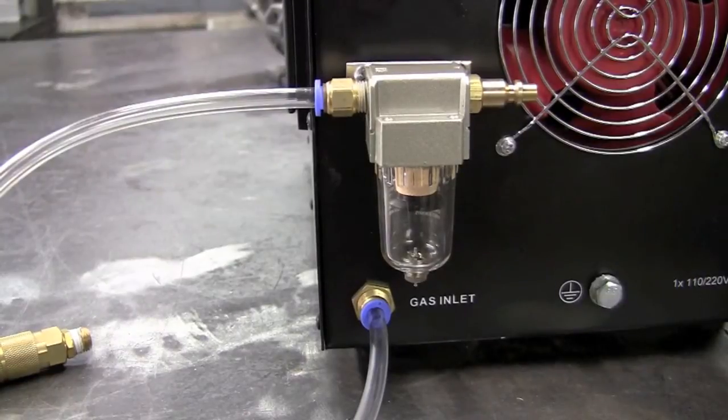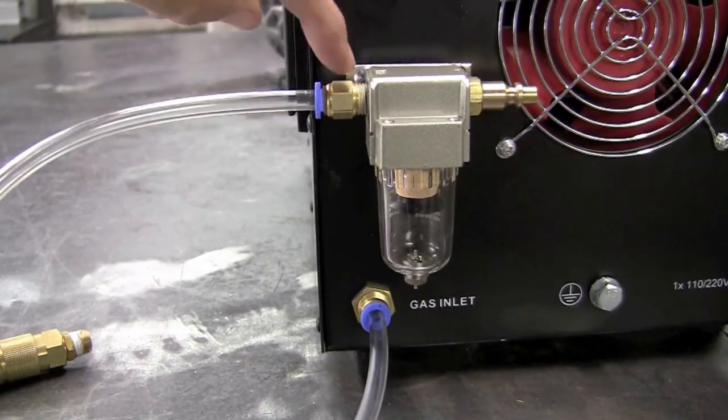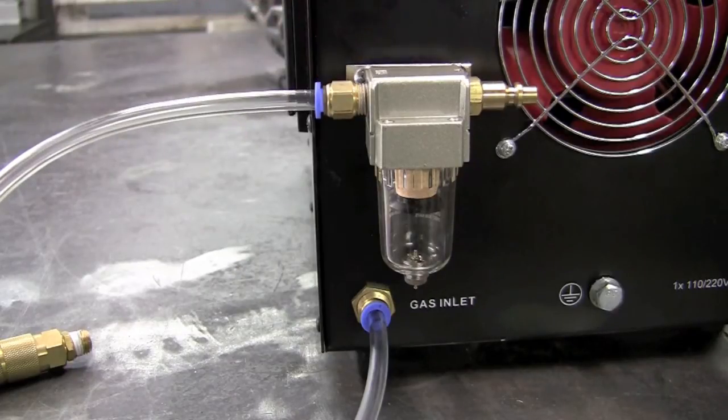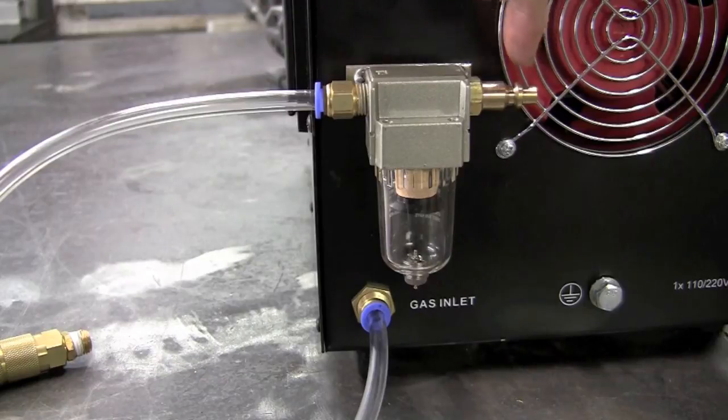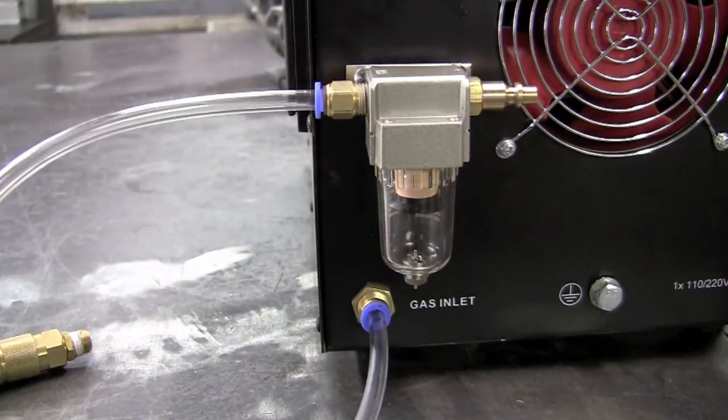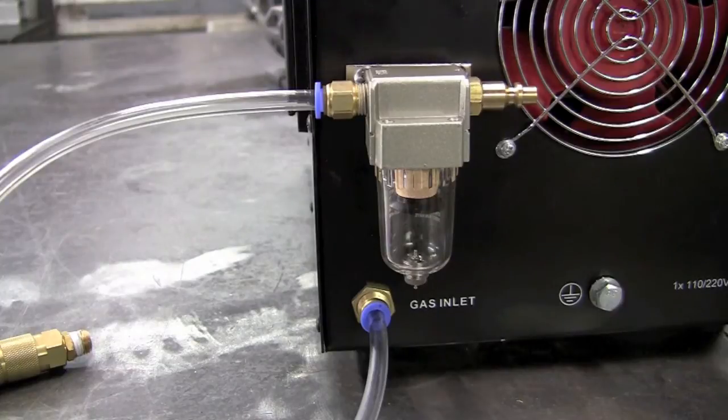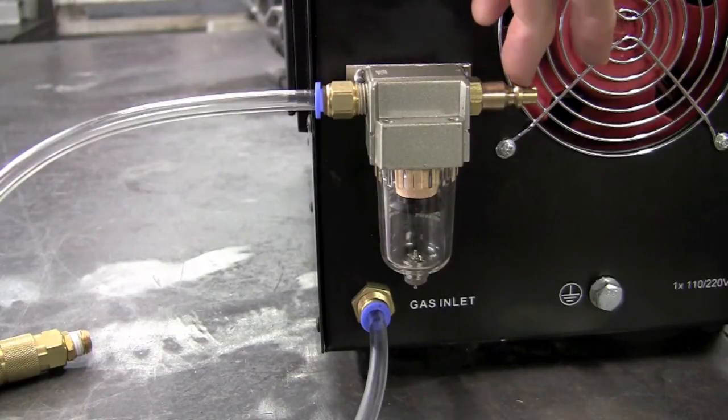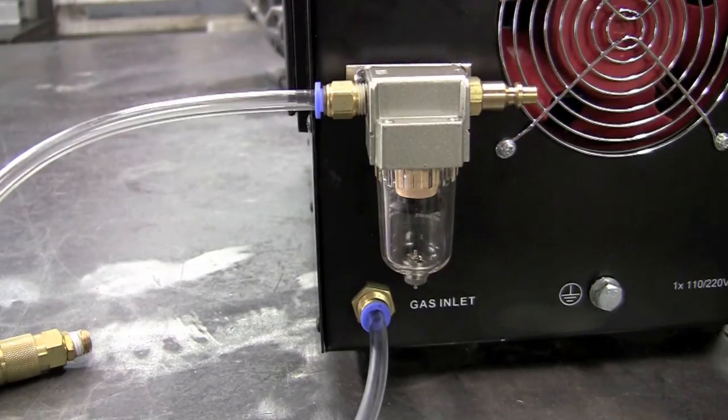This is your standard setup for the moisture trap. We have the push lock installed on the back end. So in the plasma process, we would hook up compressed air. It'll run through the moisture trap and into the machine. For the TIG process, you would hook up the argon here, run through the moisture trap and into the machine.